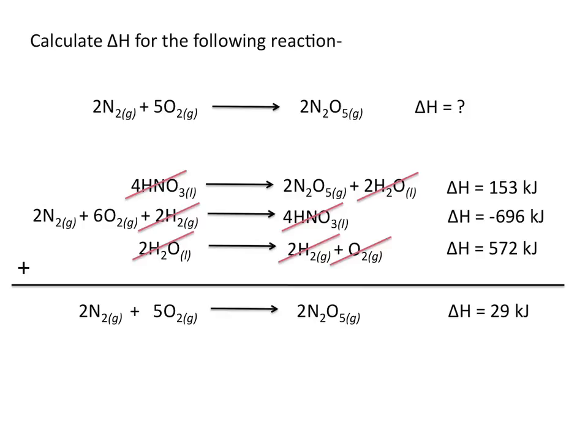Because we added up these 3 new equations, we also need to add up their delta H values. The delta H value for 2N2 plus 5O2 going to 2N2O5 is 29 kilojoules per mole.